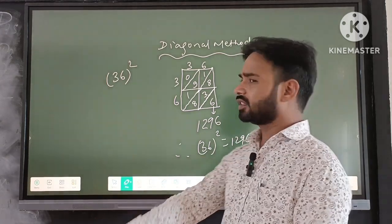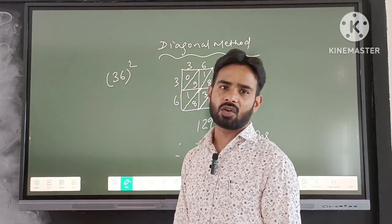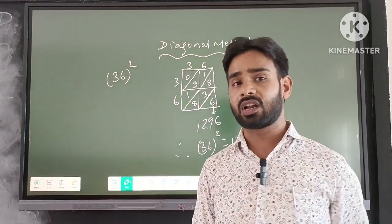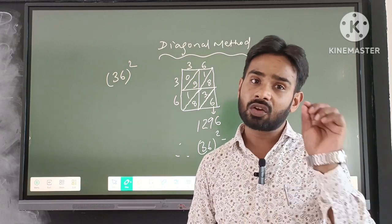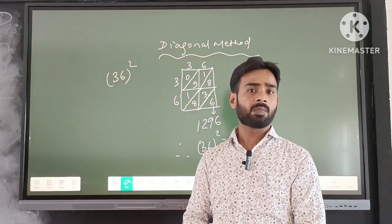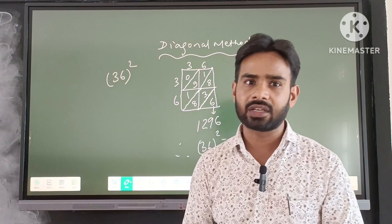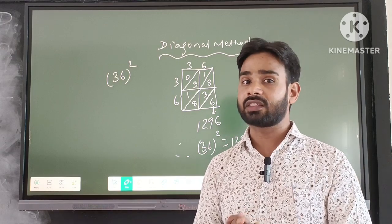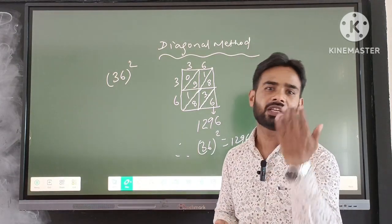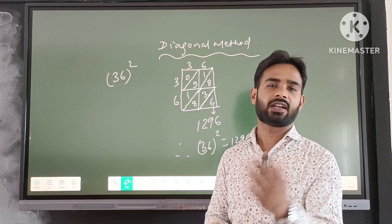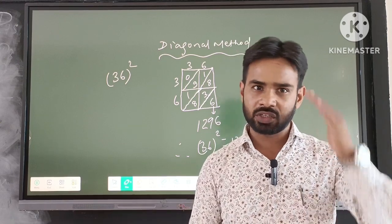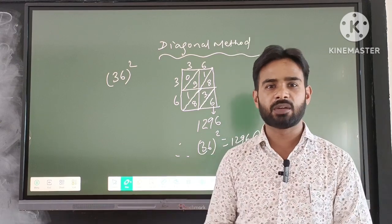This is the method for finding the square of any two-digit number using both the column method and the diagonal method. I hope you all have understood it. If you found this video fruitful, please like, share, and subscribe to my channel. Thank you so much.